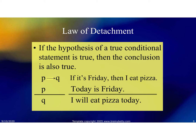The first law is called the law of detachment. It states that if the hypothesis of a true conditional statement is true, then the conclusion is also true. For example: if it's Friday, then I eat pizza. If someone says today is Friday, you can conclude that I will eat pizza today. P represents the hypothesis and Q is the conclusion. So if it's Friday is the hypothesis, and I eat pizza is the conclusion.